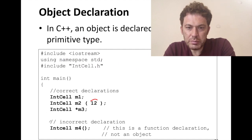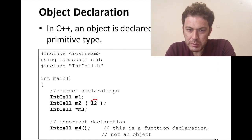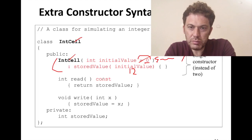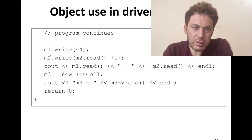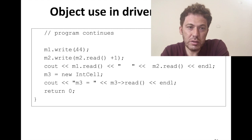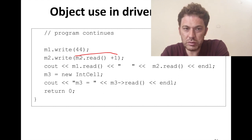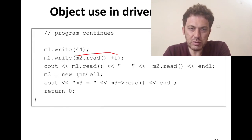Here is the driver program where I declare objects of class IntCell. m1 uses the default constructor, so stored_value is 0. m2 is initialized with 12. Note: if you don't pass any parameters, use the syntax without parentheses to avoid ambiguity. Calling m1.write(44) sets m1's stored_value to 44. Calling m2.write(m2.read() + 1) makes it 13 — 12 plus 1. m3 uses a pointer and the 'new' keyword, which we'll cover later.